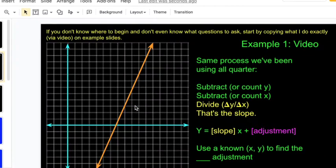Alright, so we got a line on screen. We can't see where it's crossing the y-intercept. That's no big deal. y equals the slope of that line times x plus an adjustment. That's going to be the form that our equation takes.